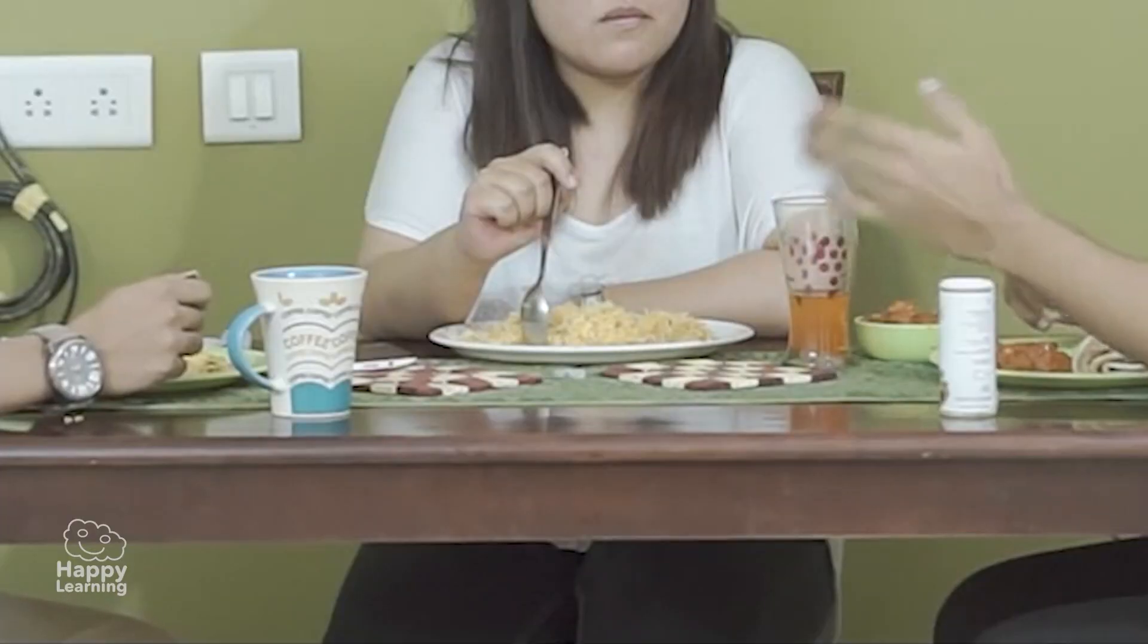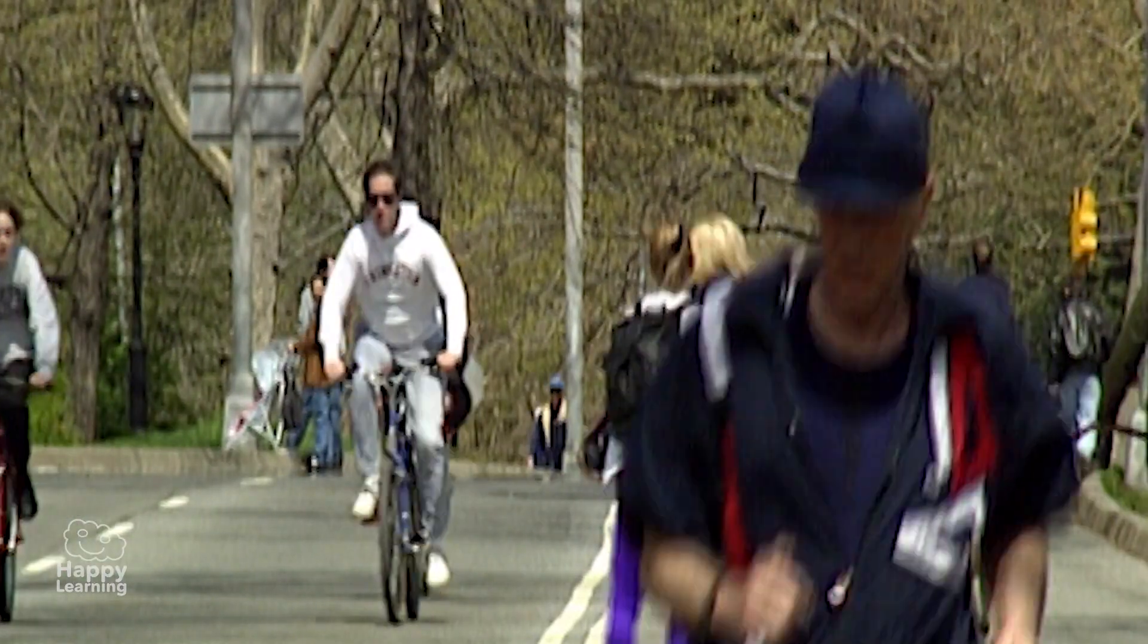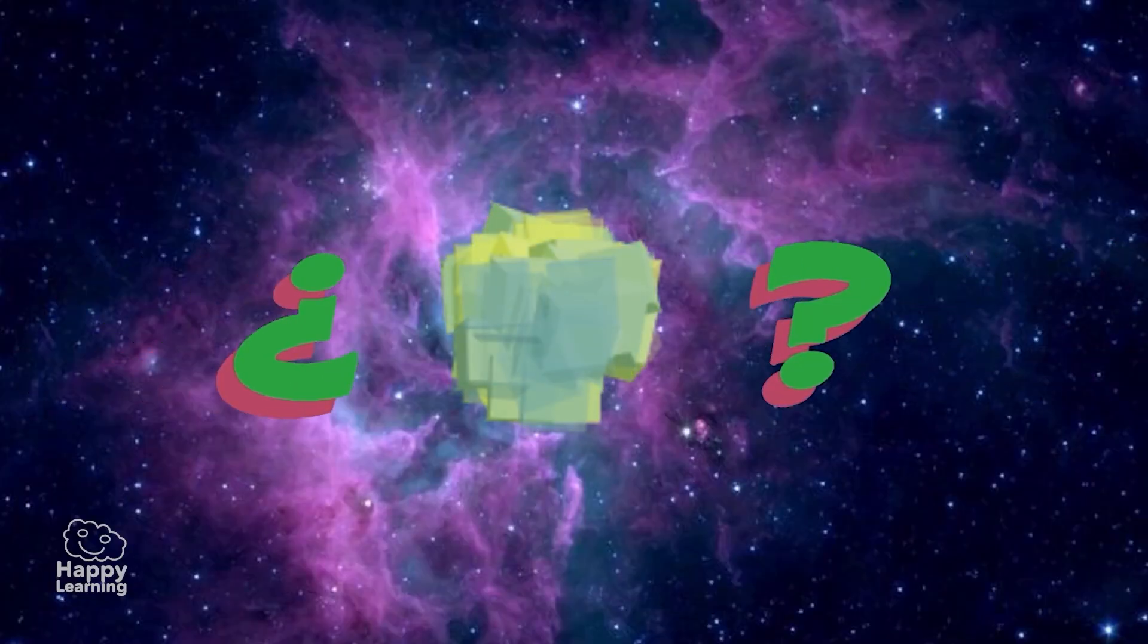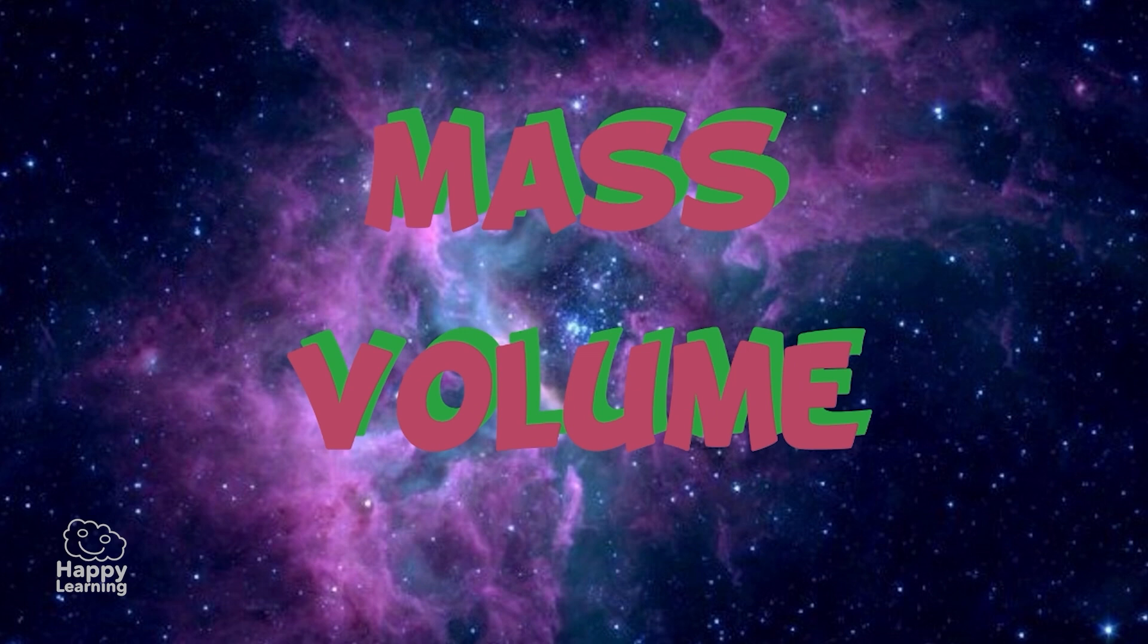Water, animals, or even a simple table are all made up of matter. But do you know what matter is? Matter is everything that has a mass and a volume. These are matter's general properties.